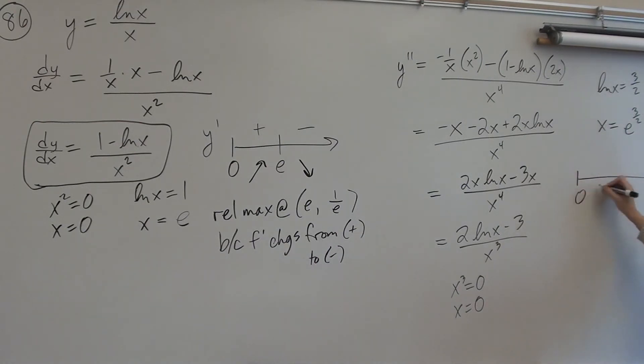Okay. And then you'd make another sign line. 0. E to the 3 halves. Here I pick... Sorry. Here I pick e to the first. I plug in. I get 2 minus 3, which is negative over positive. It's negative. I pick e to the tenth. I get 20 minus 3, which is positive over positive. It's positive. Concave down. Concave up. We have a point of inflection at e to the 3 halves. That was something. Because... Double prime. I should say y double prime. Sorry. Change is sign.